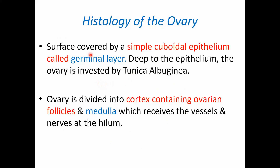The surface of the ovary is covered by simple cuboidal epithelium, which is also called the germinal layer. Deep to the epithelium, the ovary is invested by tunica albuginea. The ovary is divided into cortex, which contains ovarian follicles, and medulla, which receives the vessels and nerves at the hilum.